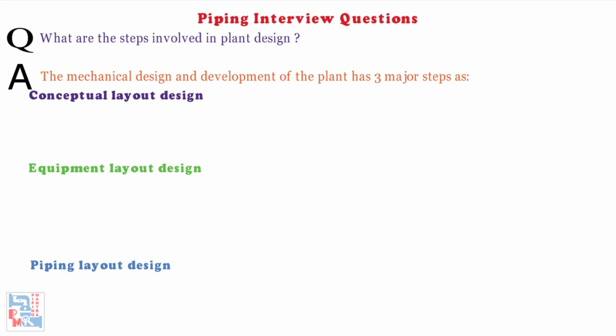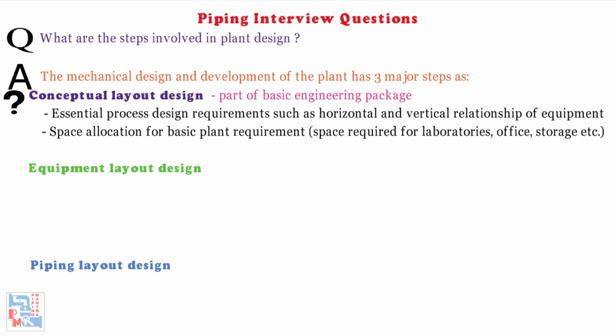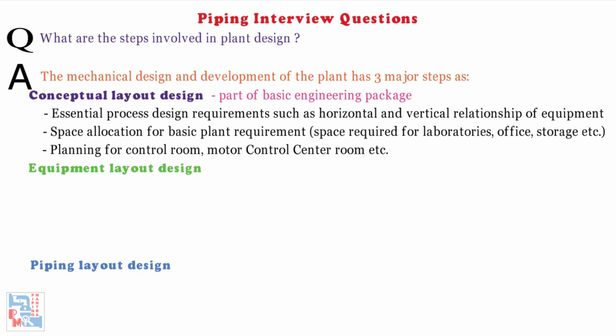What is Conceptual Layout Design? It is part of the basic engineering package. It consists of the following information: A) essential process design requirements such as horizontal and vertical relationships of equipment; B) space allocation for basic plant requirements, i.e., space required for laboratories, office, storage, etc.; C) planning for control room, motor control center room, etc.